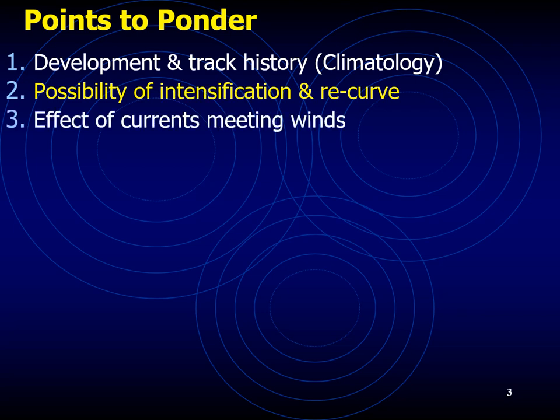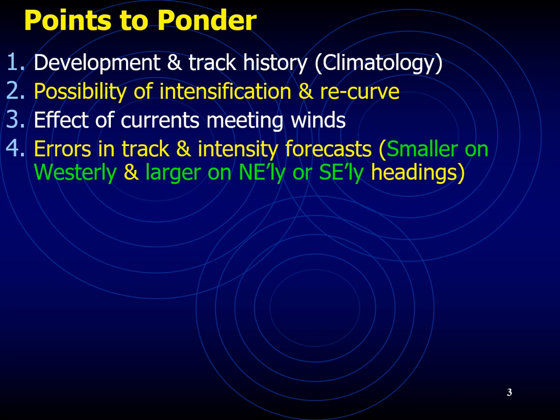Make sure you also consider the effect of currents meeting winds. For example, warm currents bring warm waters, which further fuel the tropical cyclone, because the tropical cyclone is fueled by warm water, thunderstorms, and the latent heat released due to cloud formation and rainfall. These factors help you understand whether the tropical cyclone will become stronger or is likely to decay and die down, depending on the effects of the current meeting the winds.